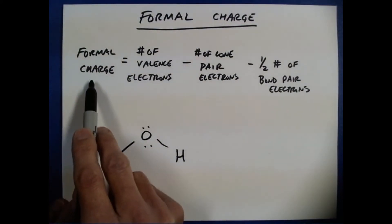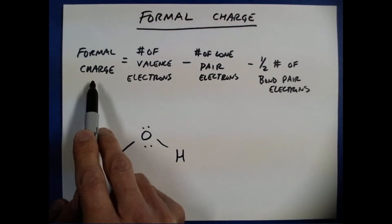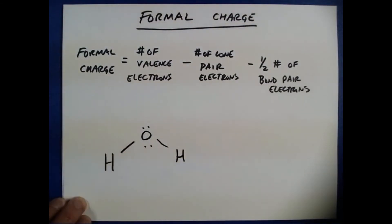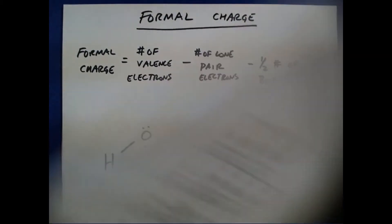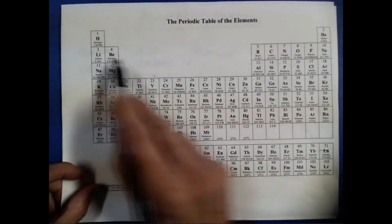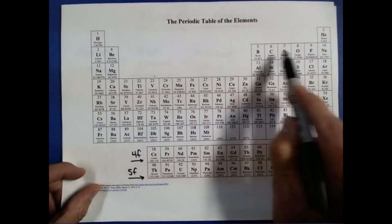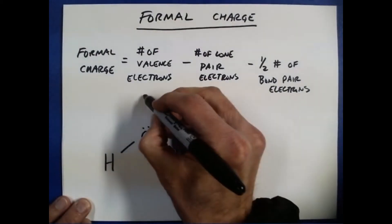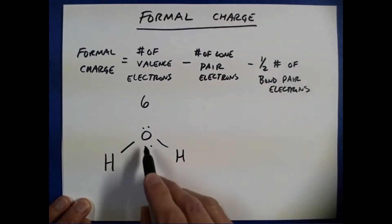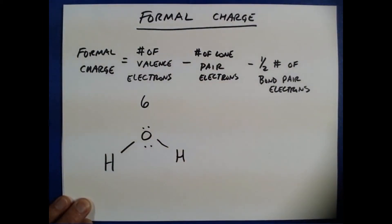If I want to calculate the formal charge on an atom, I first find the number of valence electrons in that atom. Oxygen has six valence electrons. So I'm going to write in six for my number of valence electrons in the oxygen of water.